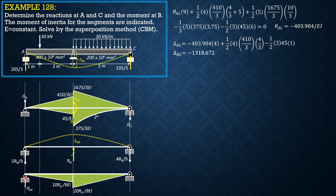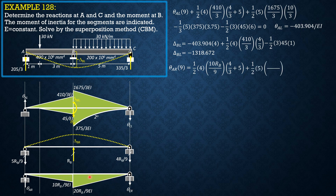We call this theta_A due to reaction and theta_C due to reaction. Solving for theta_AR: summation of moments at C equals zero, so theta_AR × 9 equals one-half of 4 × (10R_B/9) × (4/3 + 5) plus one-half of 5 × (20R_B/9) × (10/3). Simplifying gives theta_AR equals 880R_B / 243.